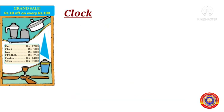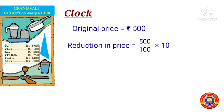Next item is the clock. The original price of the clock is equal to 500 rupees. The reduction in price is equal to 500 ÷ 100 × 10. Now cancel the zeros.